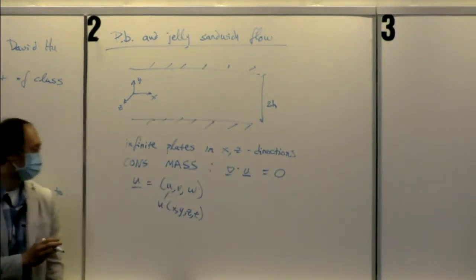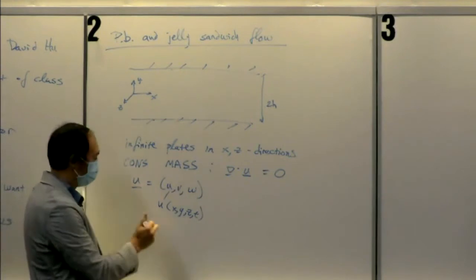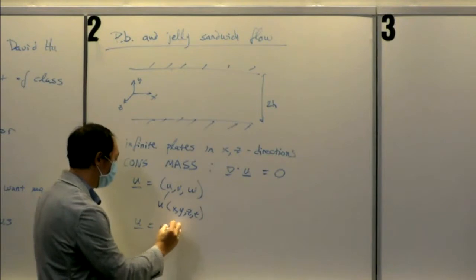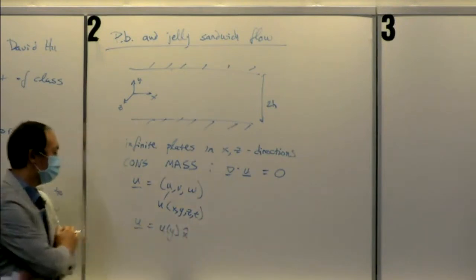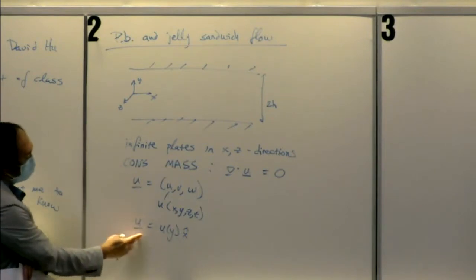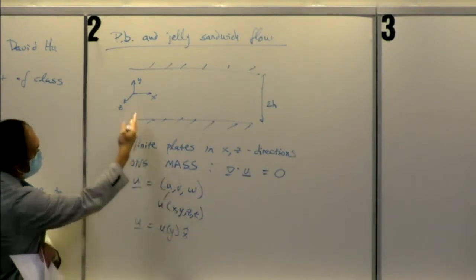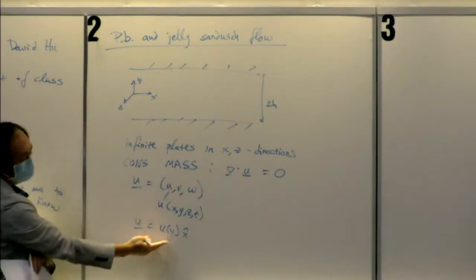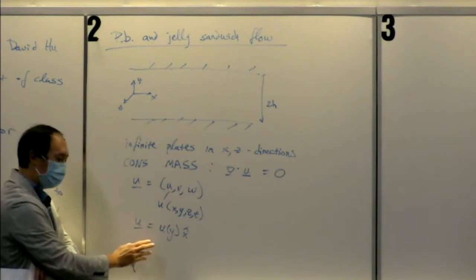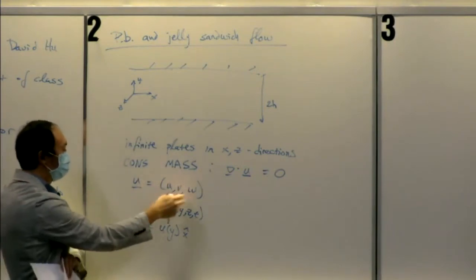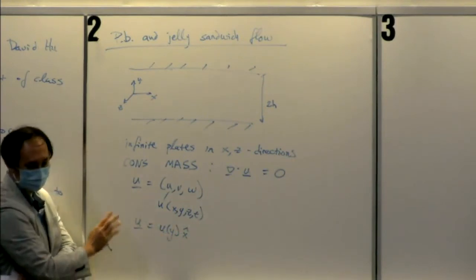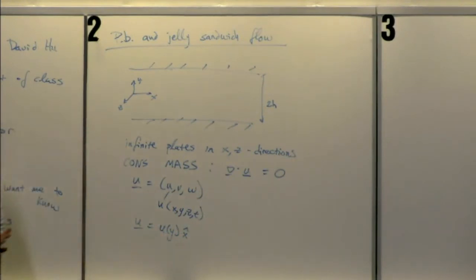But all the cases we're going to solve, this is going to become something very simple. In this case, it'll be u of y, x-hat. The velocity vector is all in the x direction and is only a function of the distance between the plates. You go from multi-variable, multi-function to single variable, single function. That's the key thing in all these Navier-Stokes problems for the quiz.